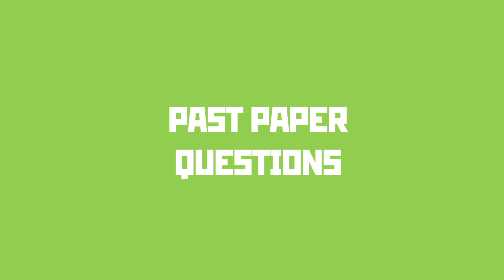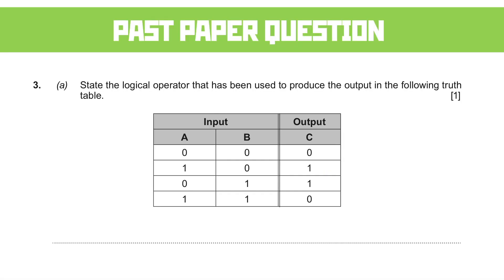Never mind, let's see those one markers then. This is a WJEC past paper question. All it's asking you to do is name the logical operator that's represented by the truth table they've given you for one mark. If you don't know the answer, you can try and work it out.